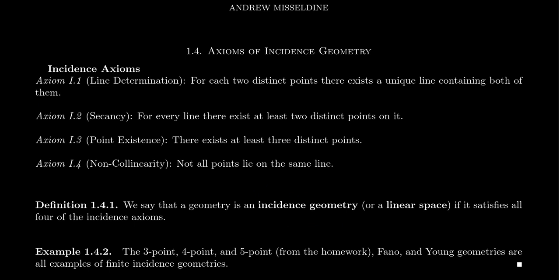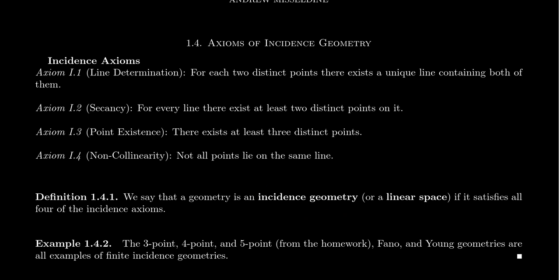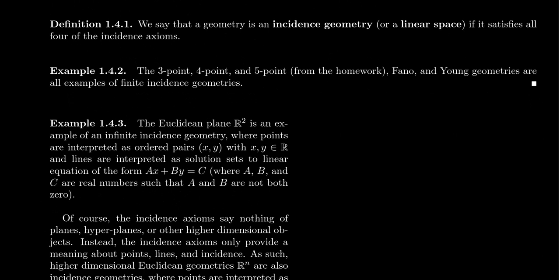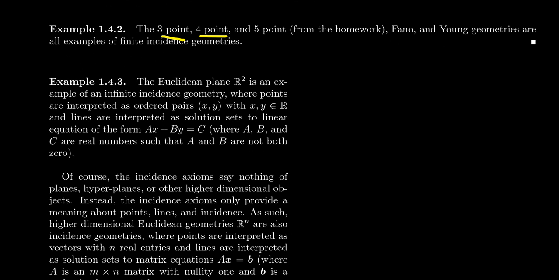Going forward for this video and other videos, you might want to copy down these incidence axioms and put them in a notebook, because we're going to refer back to them over and over again. Three-point and four-point geometry, which we discussed in lecture three, are examples of incidence geometry. The five-point geometry discussed in the homework is also an example of incidence geometry. And then Fano and Young geometries from lectures four and five are also examples of incidence geometry. These are examples of finite incidence geometries.